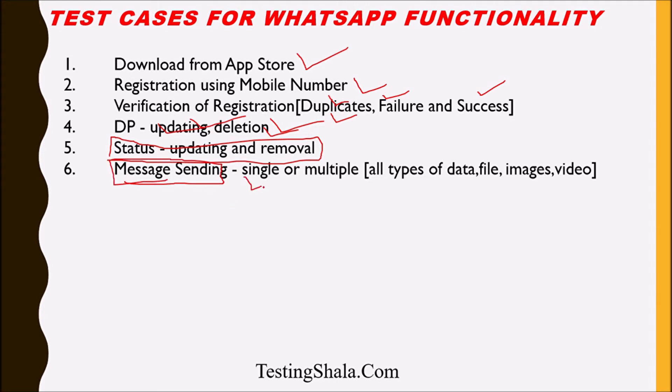The sixth test case is WhatsApp message sending, where you will be sending single or multiple files of all types of data — files, images, videos, and any kind of file. You should test with various combinations to ensure that messages with any of these attachments can be sent successfully.